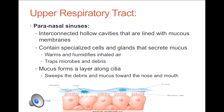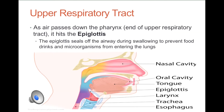As air passes from the nasal cavities and down the pharynx, it hits the epiglottis. This cartilage flap covers the larynx to seal off the airway during swallowing. This movement prevents food, drinks, and potential microbes from entering the lungs.